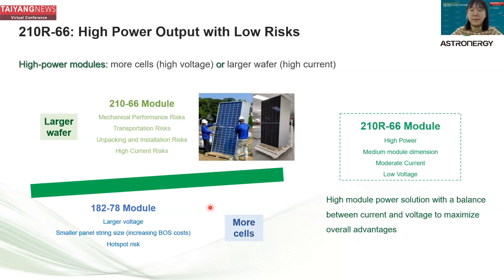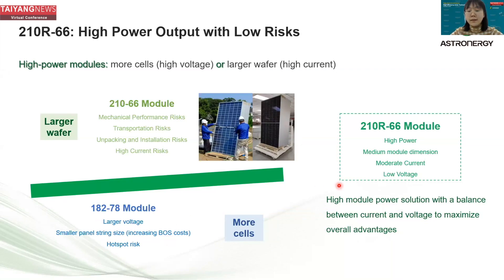On the other side, the representative for most cells is the 182×78 module. This module has a large voltage, which gives small string size and increases BOS cost, and it also brings hotspot risks. In contrast, the 210 rectangular 66 module provides high power output with medium module dimensions, moderate mechanical performance risks, moderate current, low voltage, and maximizes overall advantage.